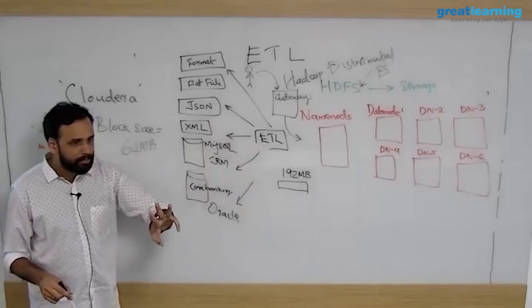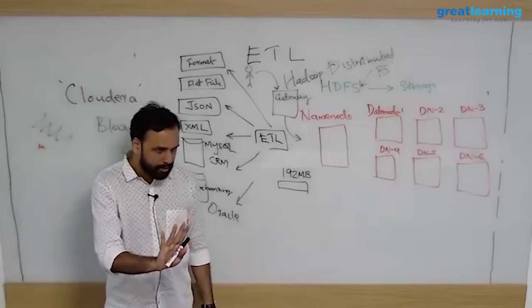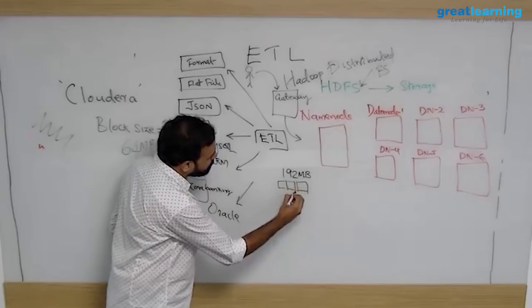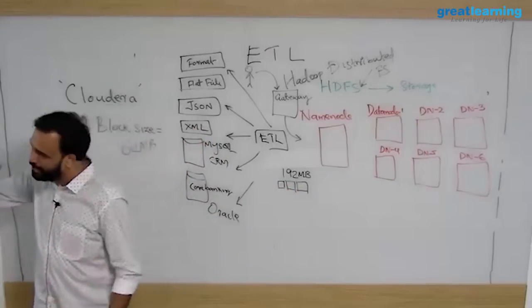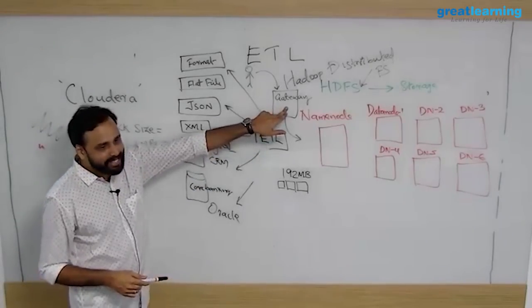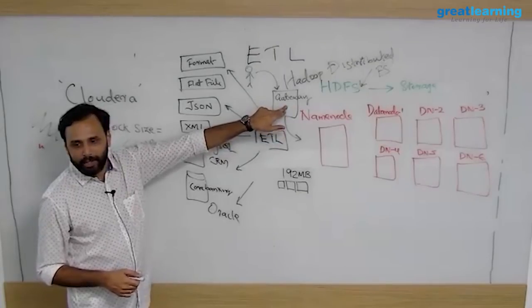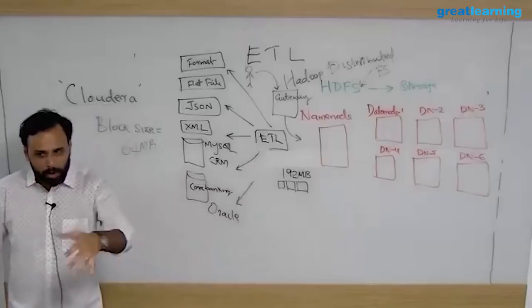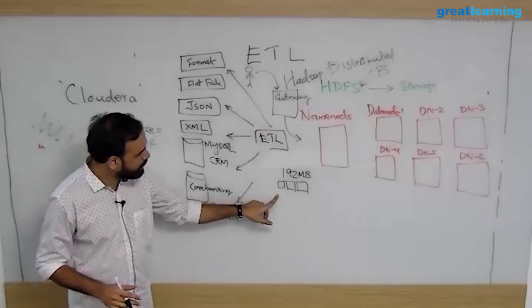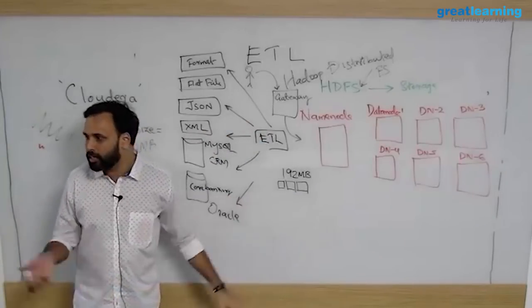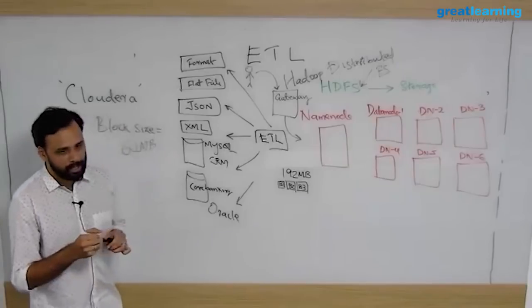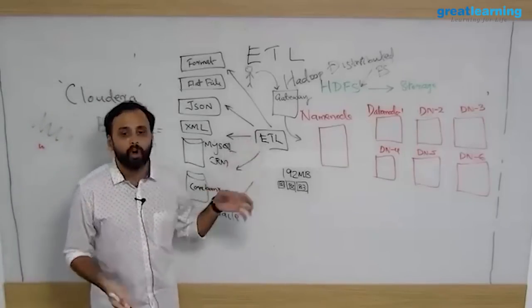This file will get divided into three blocks. You don't have to do this. This will happen behind the scenes. You have to say what is your block size and it will happen automatically. This gateway has Hadoop client installed. This Hadoop client on the gateway will already communicate with name node. Name node will say that boss in my cluster the block size is 64 MB, you manage yourself. So the client will divide your data into blocks of 64, 64, 64. Total is 192. So now you have three blocks B1, B2 and B3. Then again you go back to the name node.